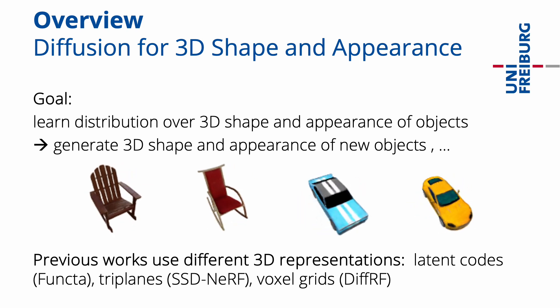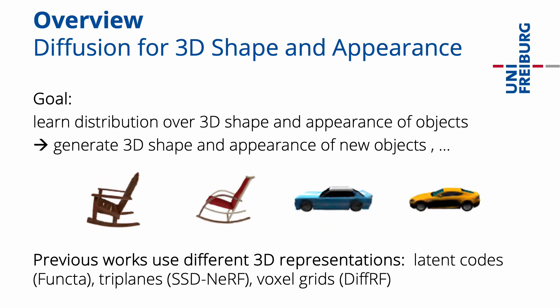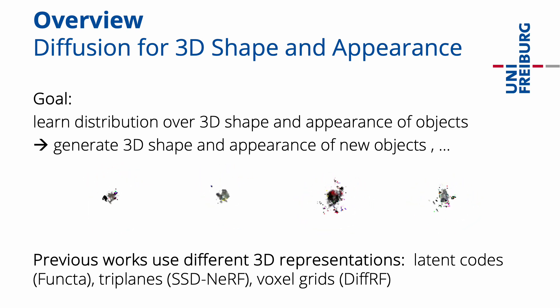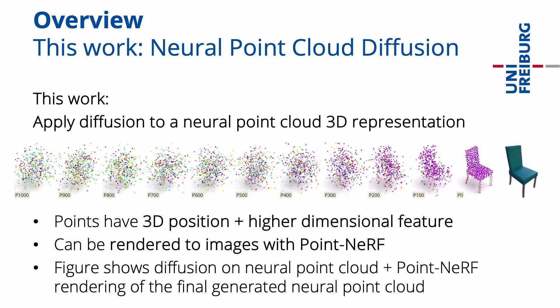Previous works have applied diffusion to different 3D representations, for example, latent codes, tri-planes, or voxel grids. In this work, we apply diffusion to a neural point cloud 3D representation.